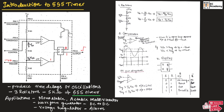Since Q=0 is given as input to the transistor, the transistor will be off. If the threshold voltage is greater than 2/3 VCC, the output of the non-inverting comparator will be high. When this high signal is given to set, Q will be 1 and Q-bar will be 0, so the output will produce a low pulse.